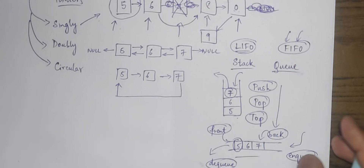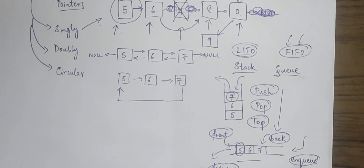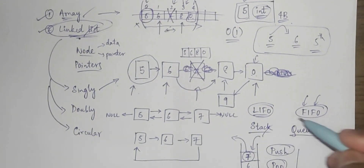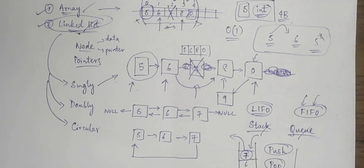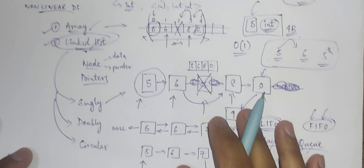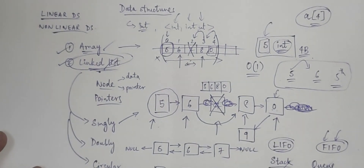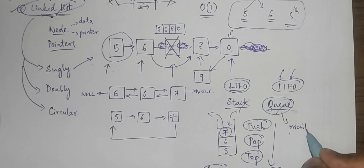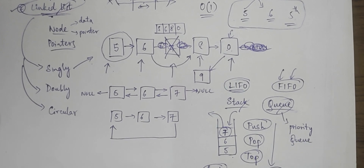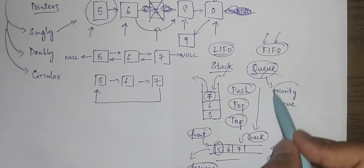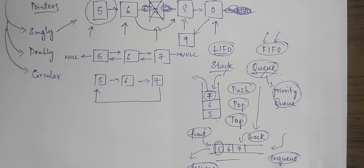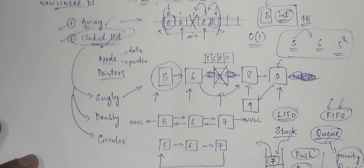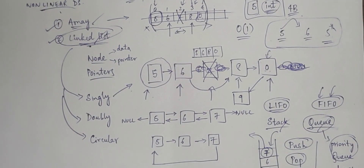So those were some of the common linear data structures you'll encounter while dealing with algorithms: arrays, linked lists, stacks, and queues. In the next video we'll discuss non-linear data structures. For example, there is also a priority queue, which is a non-linear data structure and is not exactly a regular queue. We'll discuss more about priority queues and heaps in the next video. That's it for this video, thank you for watching.